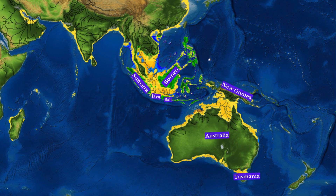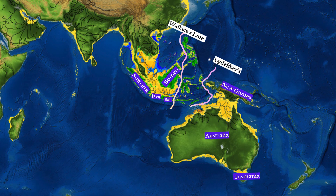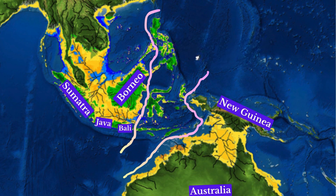Named after British naturalist Alfred Russell Wallace, Wallacea is a transitional biogeographic region between Sunda and Sahul. It is bounded by two key biogeographic lines: Wallace's line to the west and Lydekker's line to the east. Wallacea comprises a collection of islands including Sulawesi, Lombok, Flores, Timor, and the Moluccas, and is characterized by its distinct flora, fauna, and geological history.